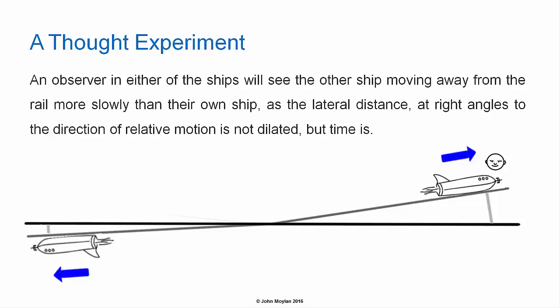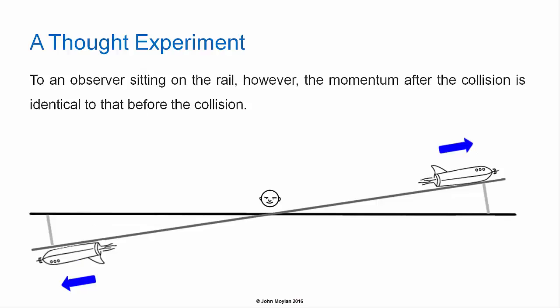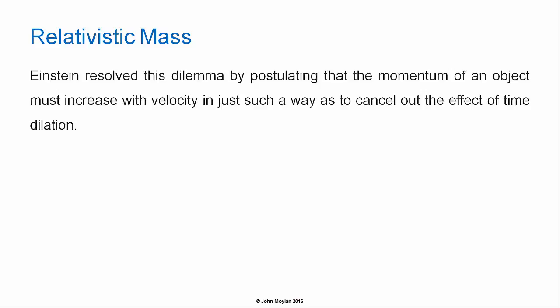An observer in either of the ships will see the other ship moving away from the rail more slowly than their own ship, as the lateral distance at right angles to the direction of relative motion is not dilated — but time is. In terms of an observer in either spaceship, the lateral momentum after the collision is not equal to that before the collision. To an observer sitting on the rail, however, the momentum after the collision is identical to that before — which violates the principle of conservation of momentum.